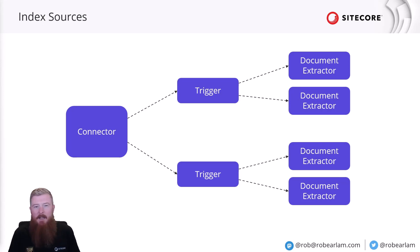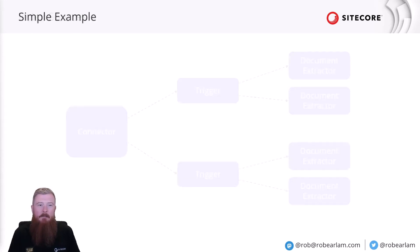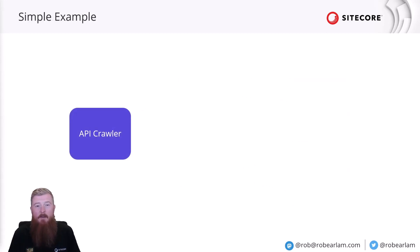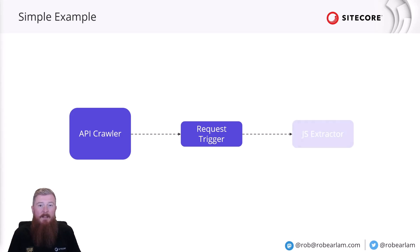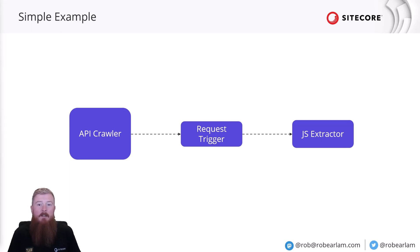This is a little bit abstract, so let's take a look at what a simple setup might look like. In this example, we're using an API crawler, as the source provides an easy-to-use API to pull the data we need. There isn't too much data we're indexing, so we can get it all in a single request trigger configured to make a single GET request, which returns all the data we need. The data returned is also well-managed and in a consistent structure, so we can use a single JavaScript extractor to match the returned objects to our attribute model.